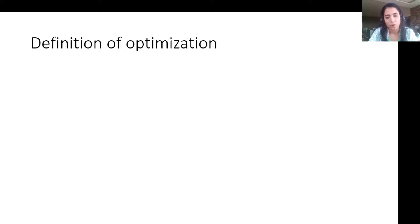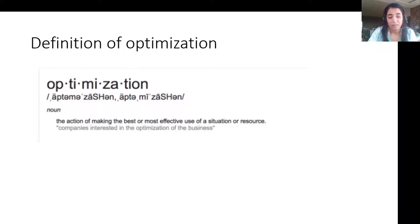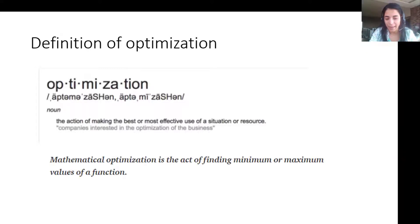If I need to define optimization by searching its definition, it is the action of making the best or most effective use of a situation or resource. Which means I need to best use some input in order to have the desired output. In math, optimization is the act of finding minimum or maximum values of a function and this function is called objective function.